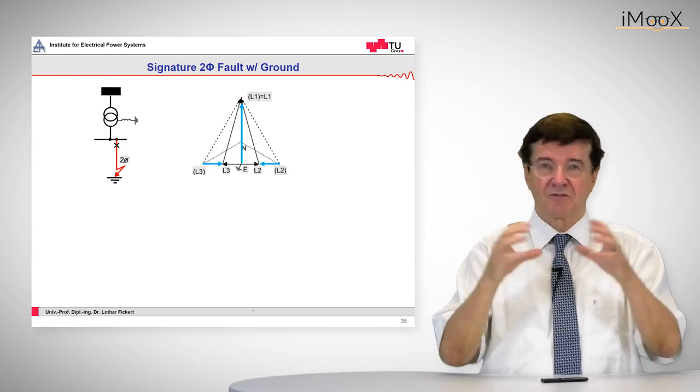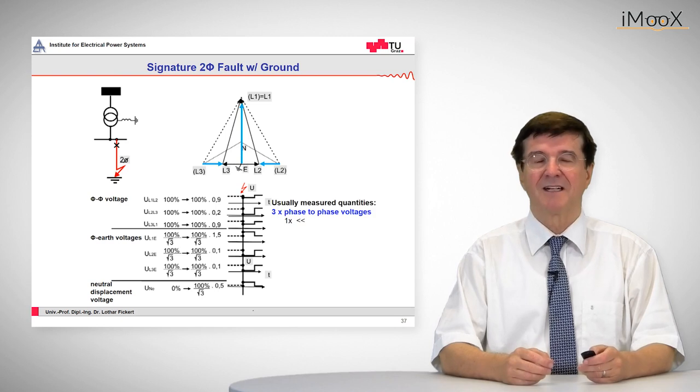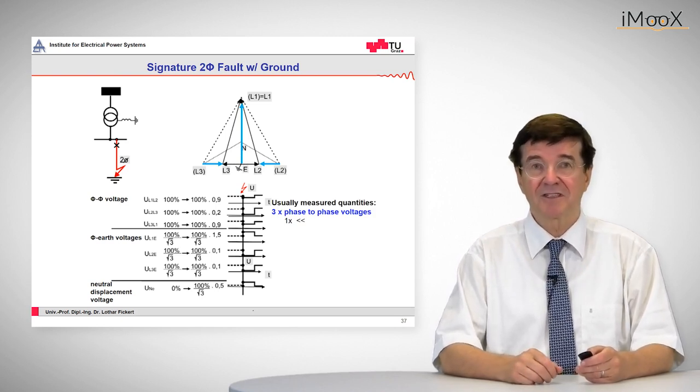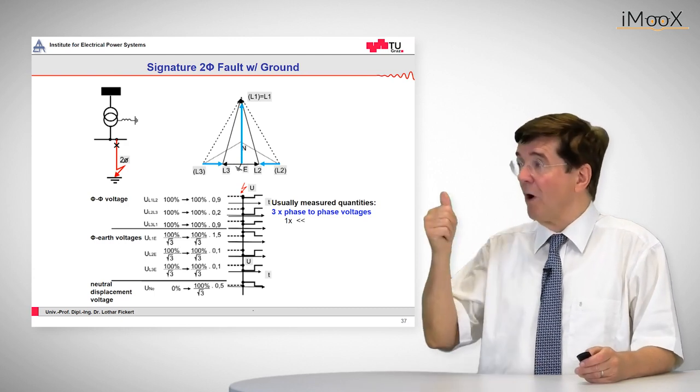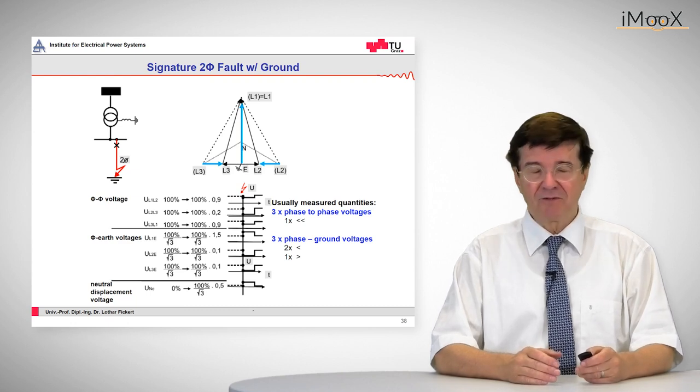Again we start with the appearance of the fault and now we can see that the two phase voltages collapse versus ground. And this pattern is repeated in the traces. So again we start with the first set of traces, which is the phase-to-phase voltages. Here we see that one phase-to-phase voltage collapses.